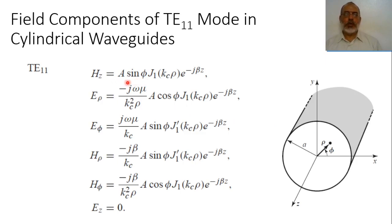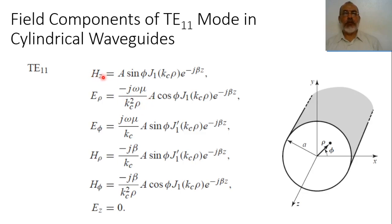We are going to use sin(φ) only. In this case the transverse field components E_rho, E_phi, H_rho, and H_phi would be obtained as follows. E_rho involves the derivative of Hz with respect to φ, giving (1/ρ)(∂Hz/∂φ), which yields cos(φ). So it is cos(φ)/ρ, with amplitude A and Bessel function J1(k_c ρ) e^{-jβz}, multiplied by the coefficient −jωμ/k_c².